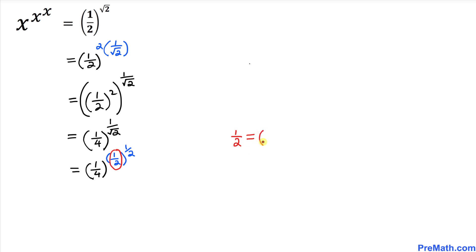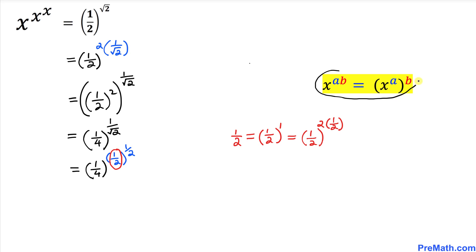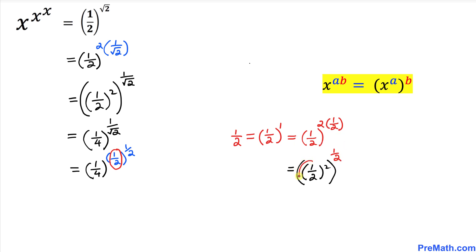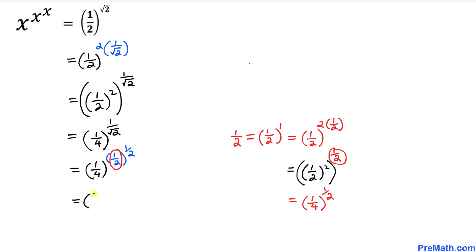This 1 over 2 could be written as 1 over 2 to the power 1 over 2. Then this could be written as 2 times 1 over 2 — since 2 times 1 over 2 equals 1. We then apply the exponent rule again on this part. This gives us 1 over 2 to the power 2, and then the whole thing to the power 1 over 2. Inside the parenthesis, 1 over 2 to the power 2 gives us 1 over 4, and then power 1 over 2.